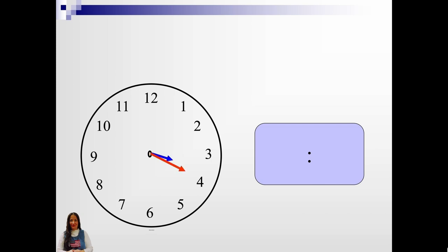3:10. What time is it? 3:20. What time is it? 3:25. What time is it? It's directly on the 12. So it would be 5 o'clock. What time is it? 9 o'clock.